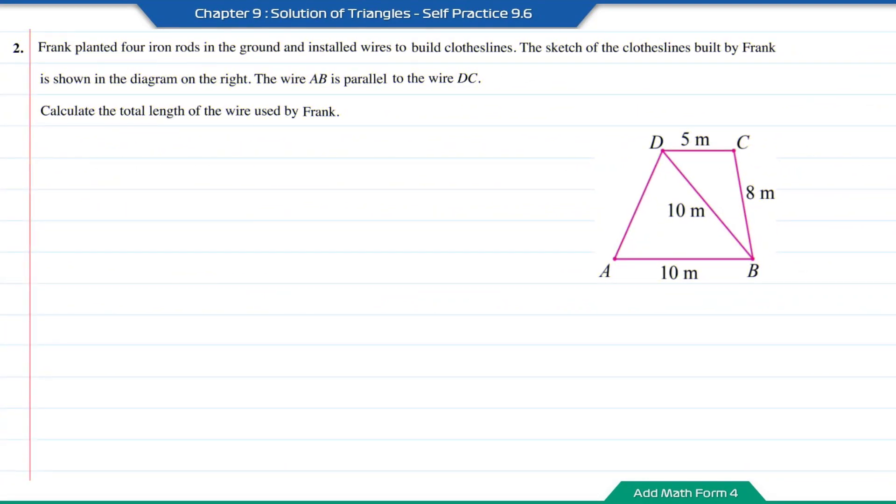Question number 2. Frank planted 4 iron rods in the ground and installed wires to build clotheslines. The sketch of the clotheslines built by Frank is shown in the diagram on the right. The wire AB is parallel to the wire DC. Calculate the total length of the wire used by Frank.